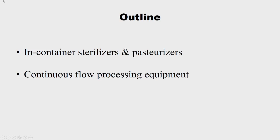Good afternoon, Ananda. Today we are going to see about thermal processing equipment — what are all the different equipments used for thermal processing of food. The outline covers in-container sterilizers and pasteurizers. The two major thermal processing operations in the food industry are pasteurization and sterilization. The first is batch process and the second is continuous flow processing equipment.